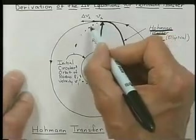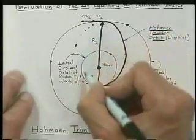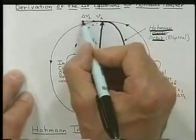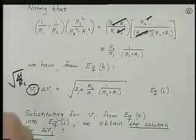When we get there, if we do nothing, we'll fall back down in this elliptic orbit and continue forever like this. If we do delta V2 up here, we can circularize and get into the orbit we want.